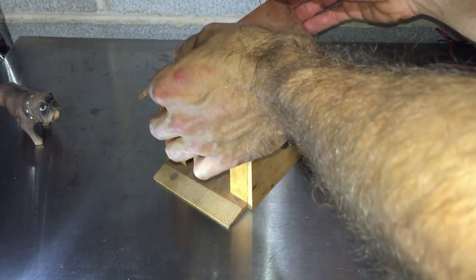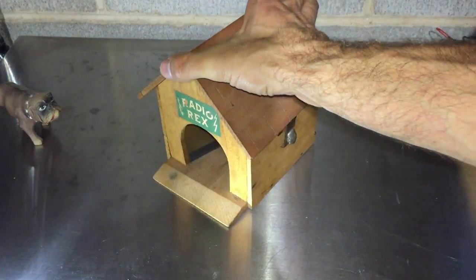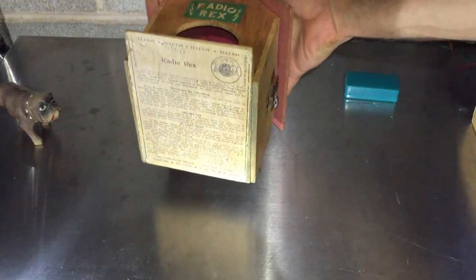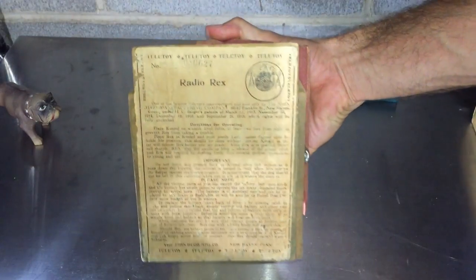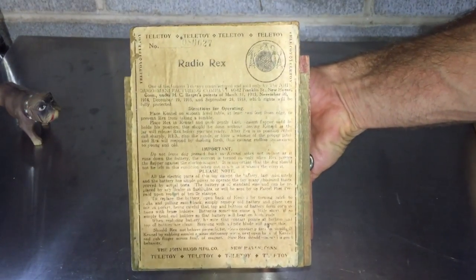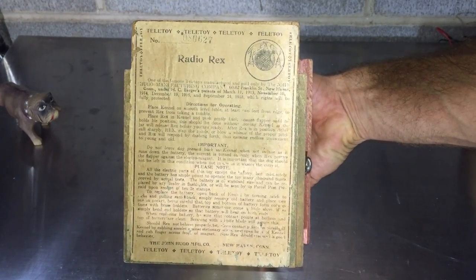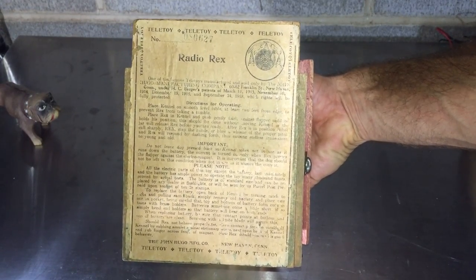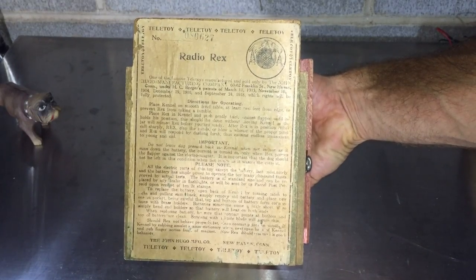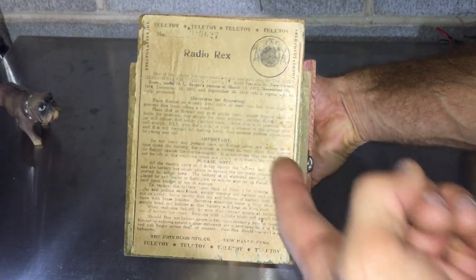So let's look inside this thing, it's very simple. Well, first of all, let's look at the bottom. It's got a really nice little instruction piece here. It says, one of the famous teletoys manufactured and sold only by the John Hugo Manufacturing Company. Got the American address, made in America, yeah. Has some directions here.